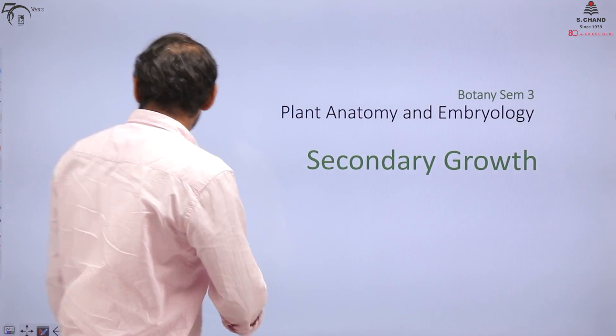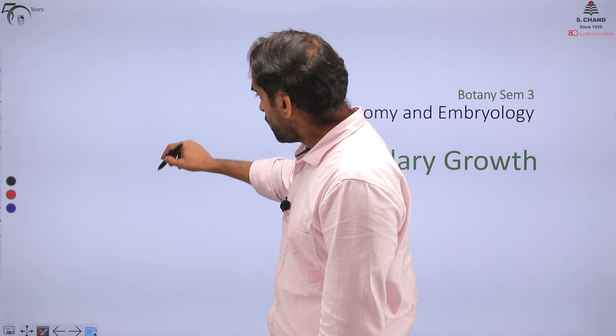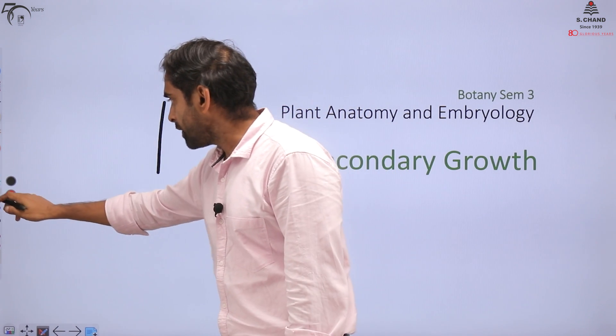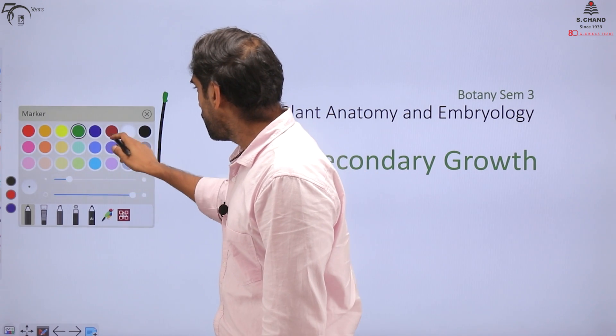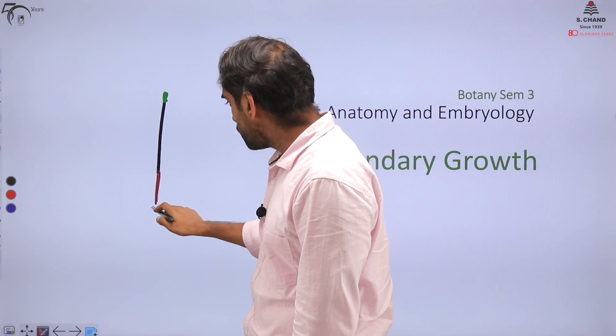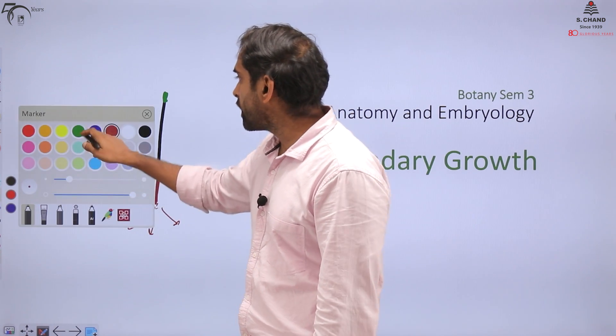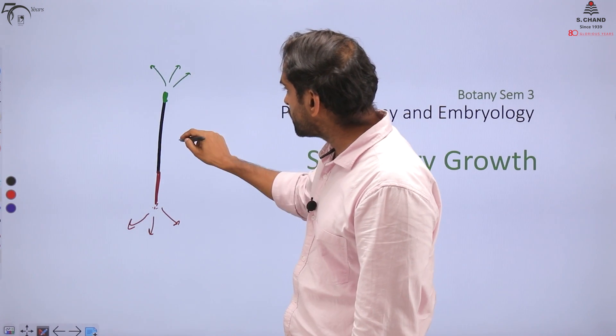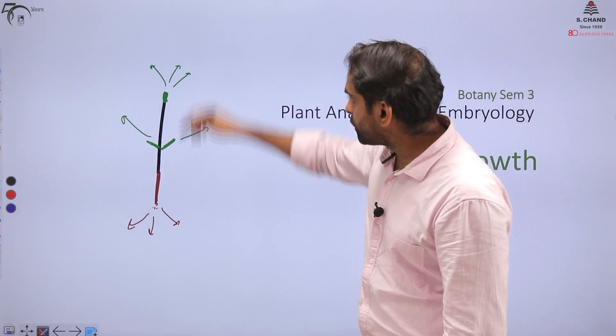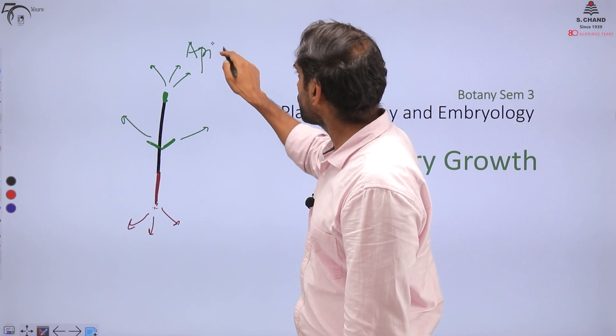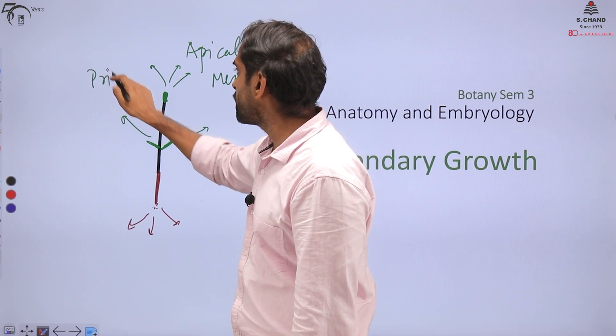Plants will have two types of growth fundamentally. One growth happens in the apex, primarily due to apical meristem. In the roots also, there will be growth. So plant will increase in both directions, vertically as well as in branches. This type of growth from the apical meristem is called primary growth.